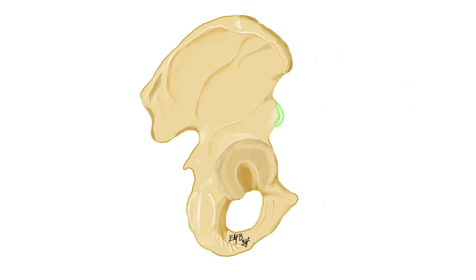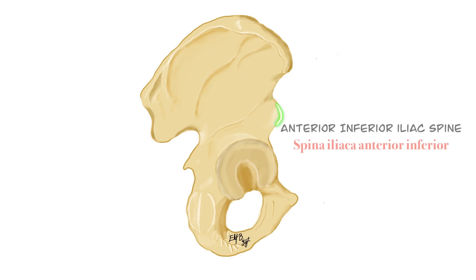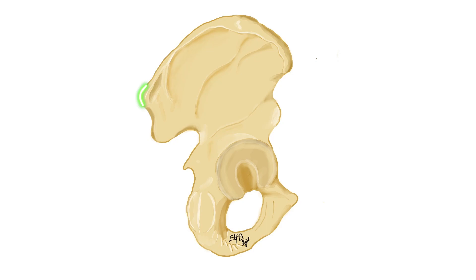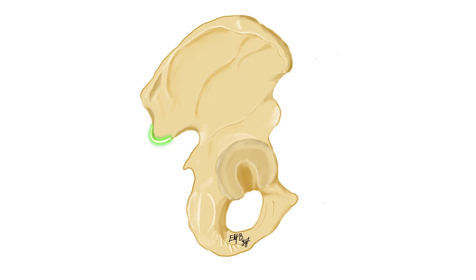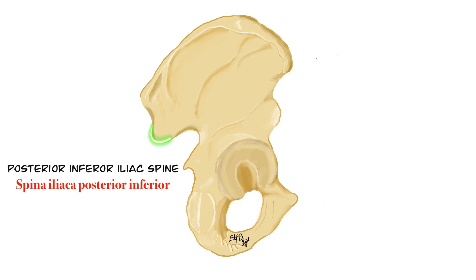At the level of the SIAS and inferior to it, there is a spinous process called the anterior inferior iliac spine, or spina iliaca anterior inferior in Latin, abbreviated as SIAI. The posterior ending of the crista iliaca is called the posterior superior iliac spine, or spina iliaca posterior superior in Latin, abbreviated as SIPS. Inferior to the SIPS, there is a protrusion called the posterior inferior iliac spine, or spina iliaca posterior inferior, abbreviated as SIPI.